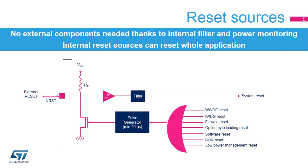Here is the simplified block diagram of the system reset. All internal reset sources provide a reset signal on the NRST pin, which can be used to reset other components of the application board. No external reset circuitry is needed due to the internal glitch filter and the safe power monitoring feature, which guarantees the reset of the application when VDD is below the selected threshold. An internal pull-up on the NRST allows a high level to be maintained when no reset signal is driven low.